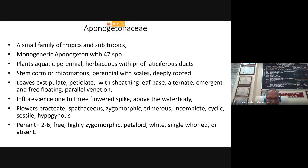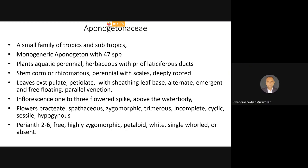Today we are going to complete two very interesting members of monocots. The first family we are going to study is the family Aponogetonaceae. Very interestingly, this family has also been recorded from Kaspathar, so it is very close to us. Aponogeton syadrica was the species which was reported from Kaspathar — it is an aquatic plant.